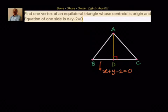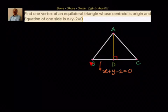Hello friends, welcome back, hearty welcome to you. Find one vertex of an equilateral triangle whose centroid is the origin and the equation of one side is x plus y minus 2 equal to 0.